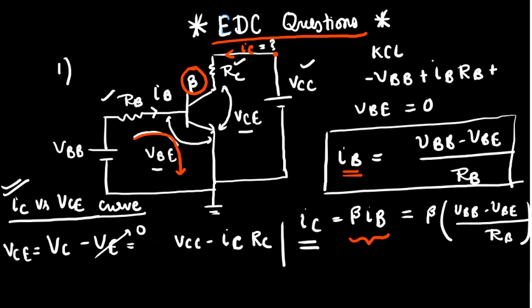And IC would be equal to beta IB. We can put this value here. And if our question says, VBB equal to some 4 volts and VBE is equal to 0.7 and RB is equal to 1K, we can put all of this value and beta is equal to 100. So we can put all of this value and we can evaluate IC.